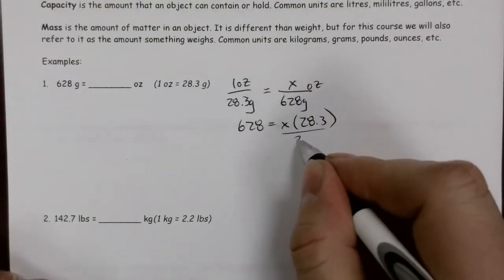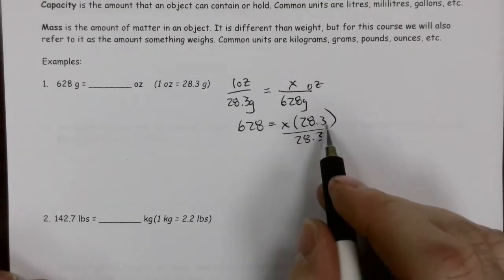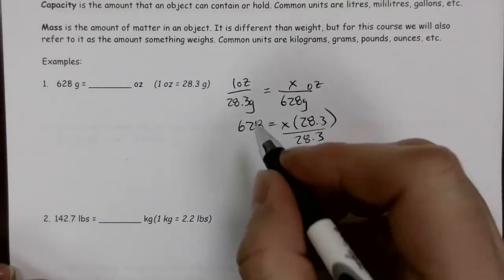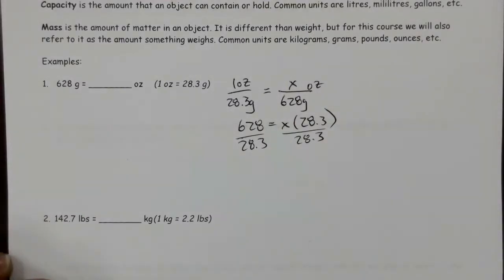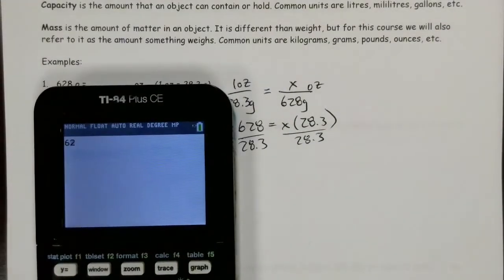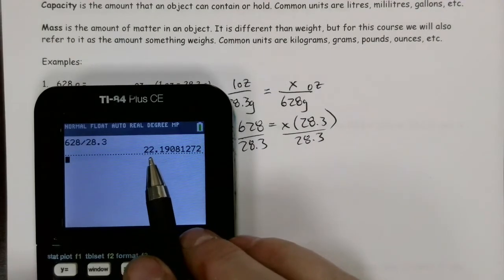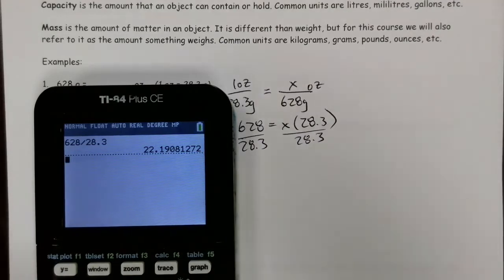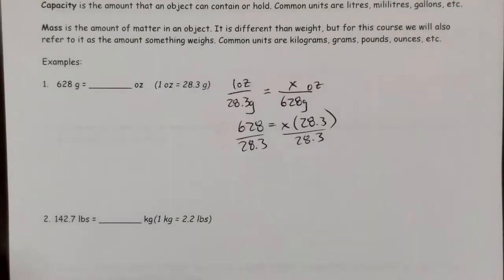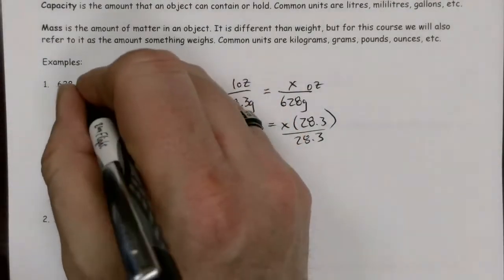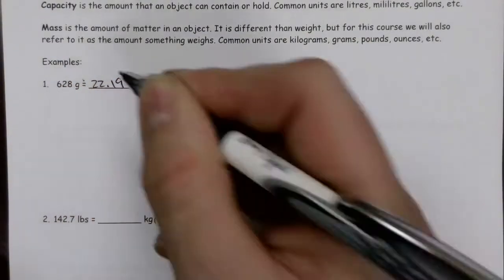That 28.3 is a coefficient of my x. To get rid of it, I have to divide both sides. So 628 divided by 28.3, and we get 22, rounding to the nearest hundredth, 22.19. So it's approximately 22.19 ounces.